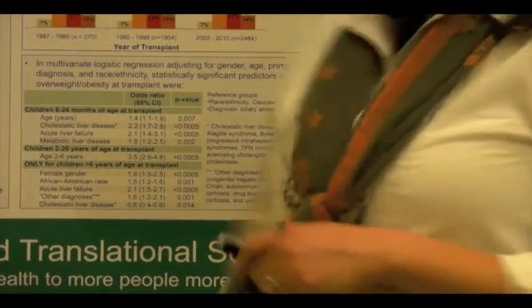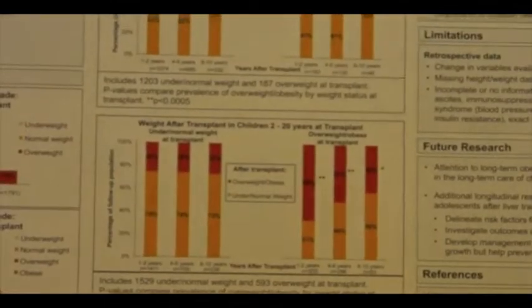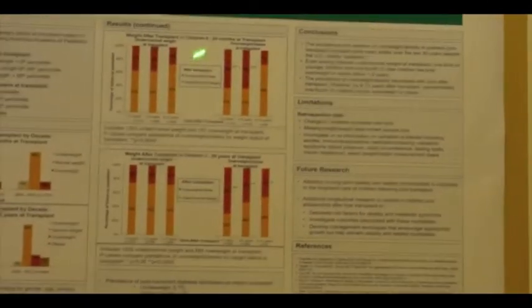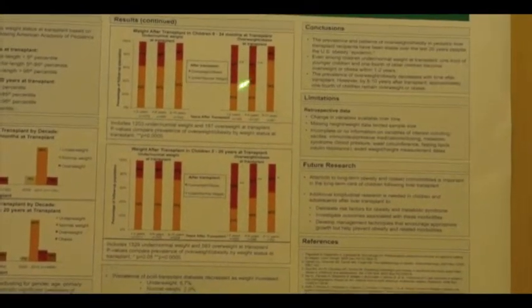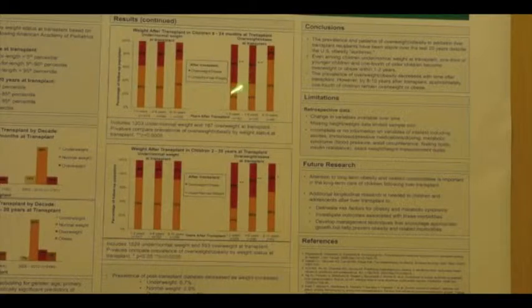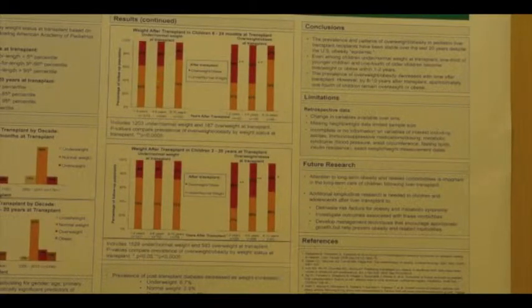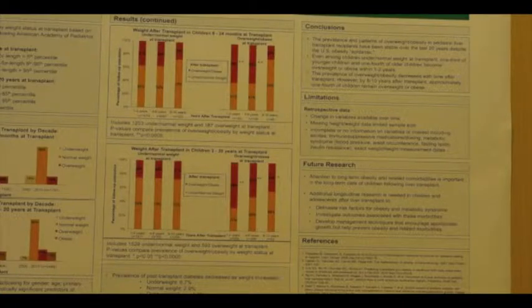We then examined how weight status before transplant affects weight status after transplant. In children 6 to 24 months at transplant, we found that those who were overweight or obese at transplant had a higher risk of being overweight or obese after transplant compared to those who were under normal weight at transplant. This held at 1 to 2 years and 4 to 6 years after transplant, but the difference between groups resolved by 8 to 10 years.